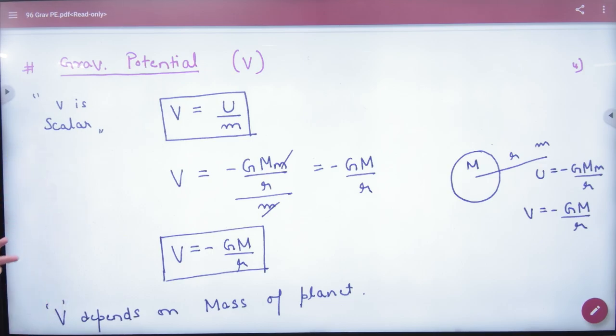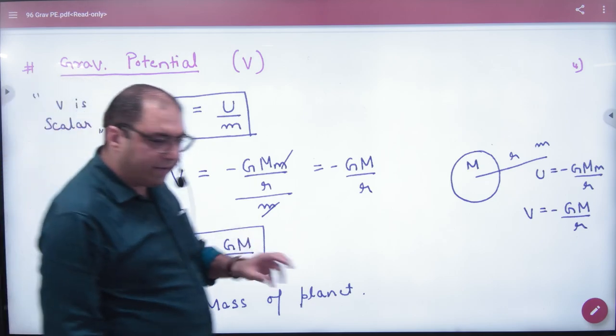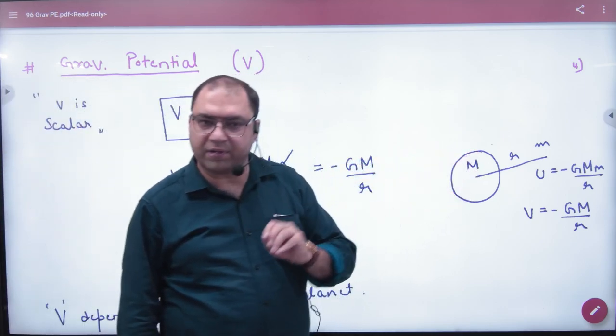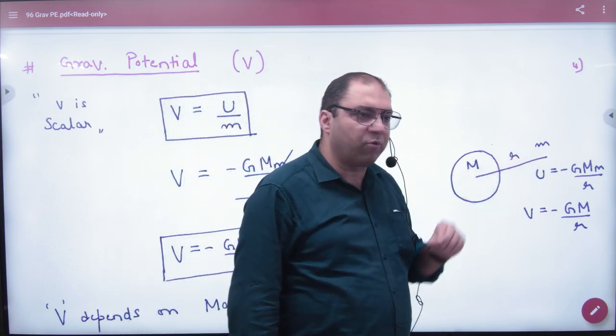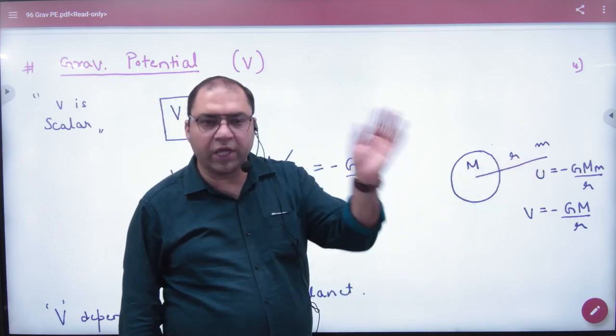Gravitational potential V means that suppose one planet is, this planet's mass capital M is, and small r is a point mass, small m. How much energy is in these two masses?